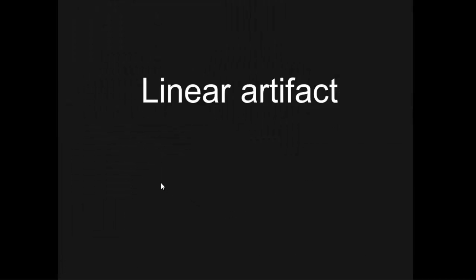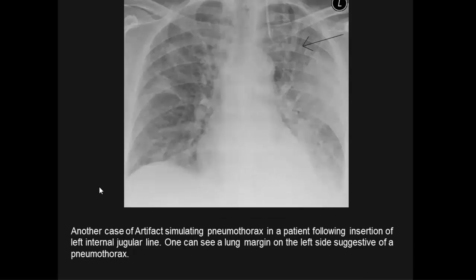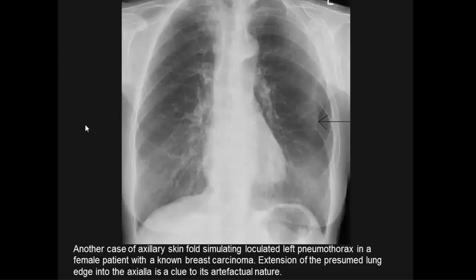Linear artifacts: a curvilinear opacity on the right side with lucent lung lateral to it simulates a pneumothorax, with ill-defined opacification in the right mid and lower and left lower zones — absent on repeat study confirming artifact. Another artifact simulates pneumothorax following insertion of a left internal jugular line, with lung markings visible on the left. An axillary skin fold simulates a loculated left pneumothorax in a female patient with known breast carcinoma; extension of the apparent lung edge into the axillary region confirms its artifactual nature.